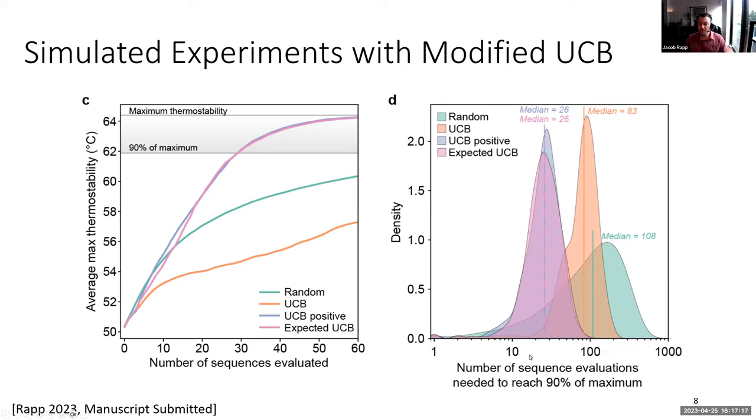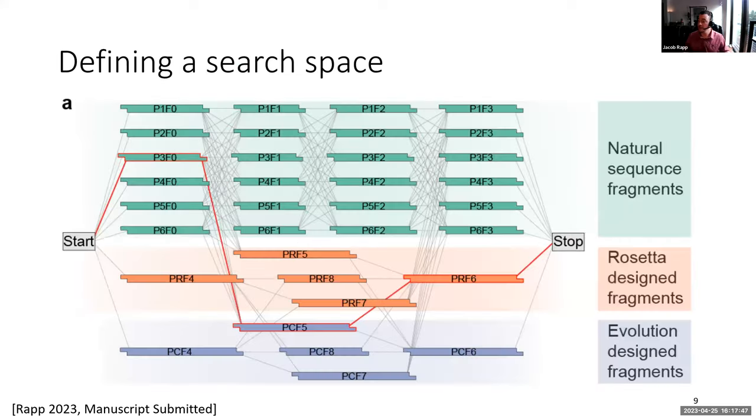That gives us our expected UCB, I will refer to it as EUCB through the rest of this talk. If you look at the histograms to the right here, it seems that both UCB positive and expected UCB have very similar medians to the time it takes for them to reach 90% of the maximum thermal stability in this data set that we are using. These are simulated experiments on a data set from a previous paper that did P450s, chimeric P450s.